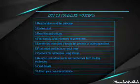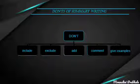Next, I would like to introduce some don'ts of summary writing. Don't include anything extra in your summary writing. Don't exclude anything important. Don't add anything of your own. Don't comment, and don't give examples. Also, don't offer an opinion on what you are summarizing, and don't use direct quotes — express the author's idea in your own words.